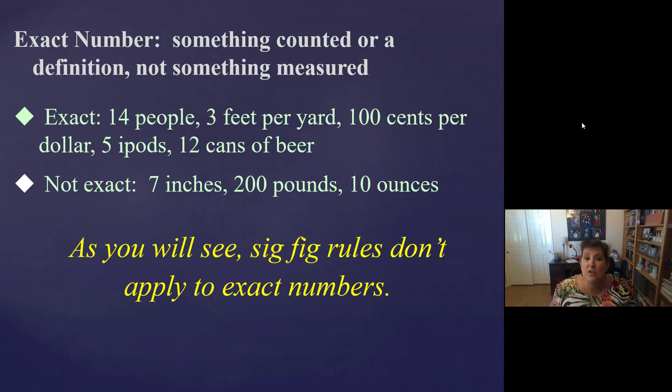What's not exact are measurements. Seven inches. Could have been 6.9 and they rounded up. 200 pounds. Could have been 199 pounds and they rounded it. Ten ounces. Could have been 10.2 ounces and they just rounded it. Those are measurements. They can be rounded. They're not exact. As we'll see later, significant figure rules don't apply to exact numbers like a hundred cents per dollar or three feet per yard or 12 inches per foot.